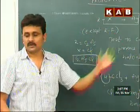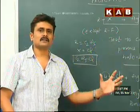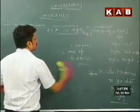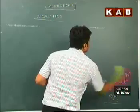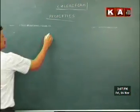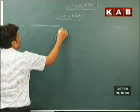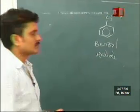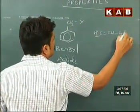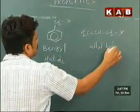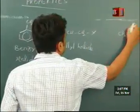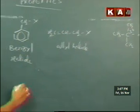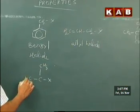Now let us see the order of reactivity of various alkyl halides towards this particular reagent which is being used to test alkyl halides. Now if you have various alkyl halides like benzyl halide, next you have tertiary alkyl halide, then secondary, and primary.